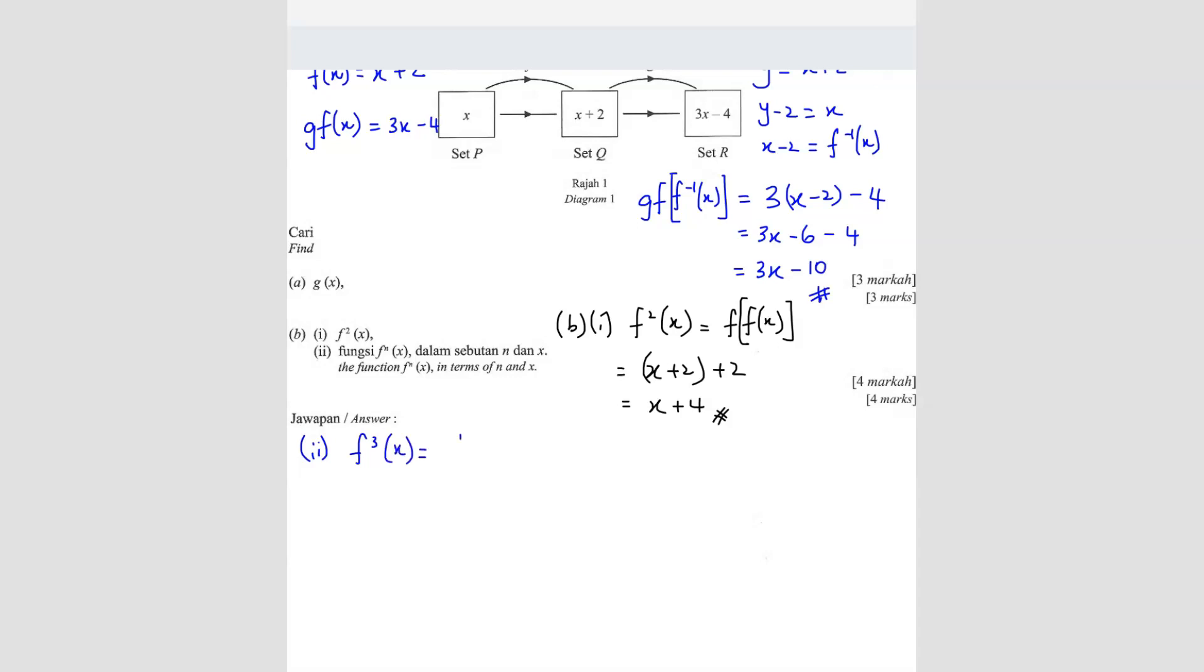So f3 is actually equals to what? f2 with another f, right? It's basically this. So what we're going to do is we're going to substitute fx into the f2. So it's going to be x plus 2 plus 4 equals to x plus 6. So what do you see here? You notice that when I'm looking for f...